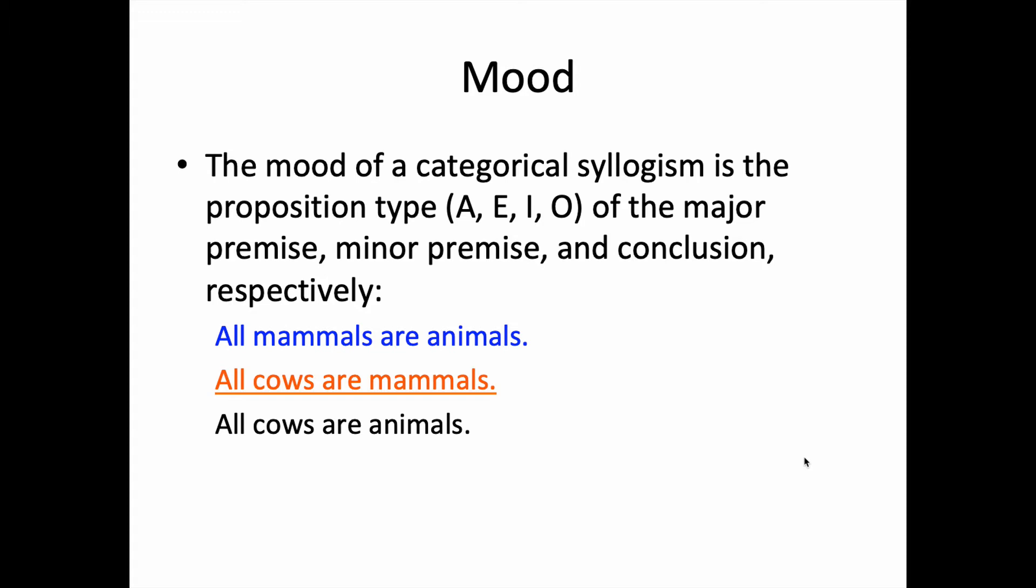In our example, notice that we have two universal affirmative premises, that is, two A propositions, and a universal affirmative conclusion, or another A proposition. So, the mood is A, A, A.